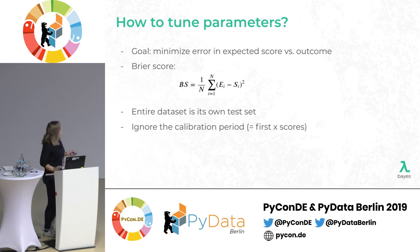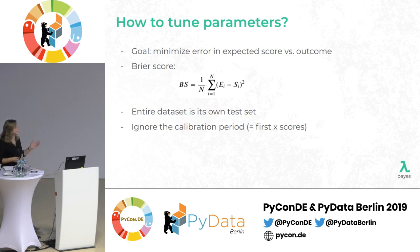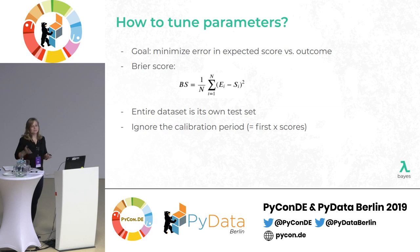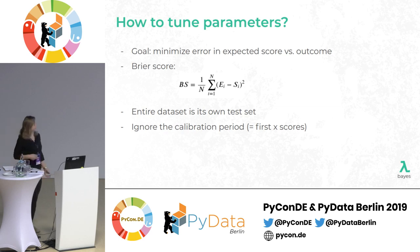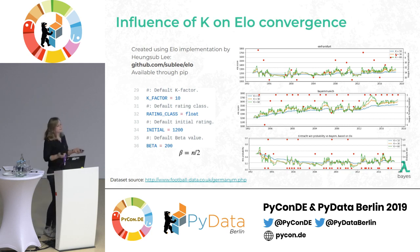On tuning: we want to minimize the expected score versus the outcome — we call this the Brier score, which is really just mean squared error. The cool thing about these algorithms is that our entire dataset is our test set, because if we take the rating before each match we can use every single row — except we should probably ignore the calibration period, since the early bump in ratings is not an actual measure of the algorithm's quality.